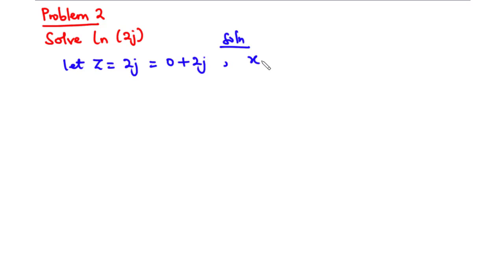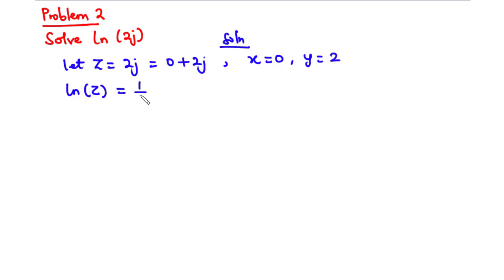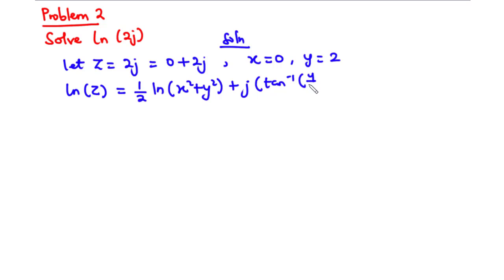So we have the x component equal to 0 and the y component equal to 2. Since we are interested in finding the principal value, we are going to use equation 3. From equation 3, we have ln of z equals one-half times ln of (x squared plus y squared) plus j times tan inverse of y over x.